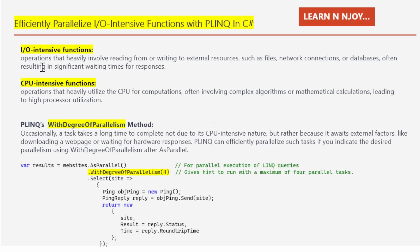I/O intensive functions are operations that heavily involve reading from or writing to external resources such as files, network connections, or databases, often resulting in significant waiting times for response. Whereas CPU intensive functions are operations that heavily utilize the CPU for computations, often involving complex algorithms or mathematical calculations, leading to high processor utilization.